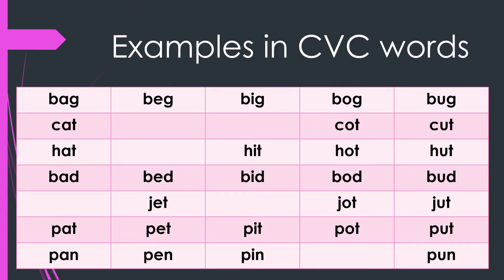Examples of different medial sounds in CVC words: Bag, Beg, Big, Bog, Bug. Cat, Caught, Cut. Hat, Hit, Hot, Hut.